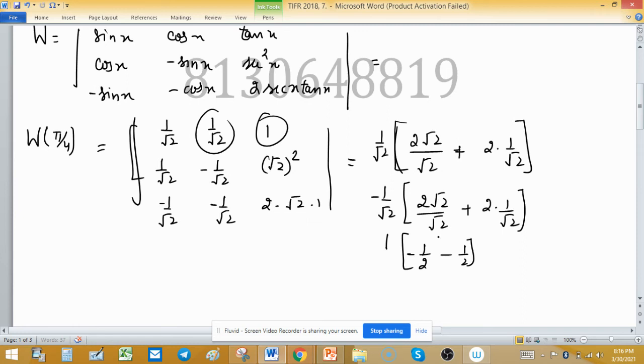This simplifies to minus 1, and 2 root 2 divided by root 2. This cancels out and we get 4.